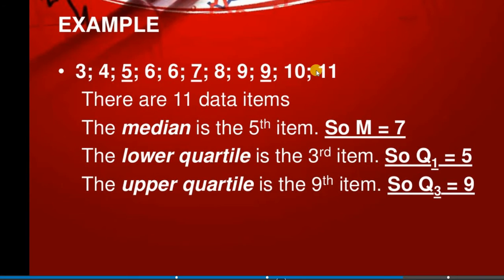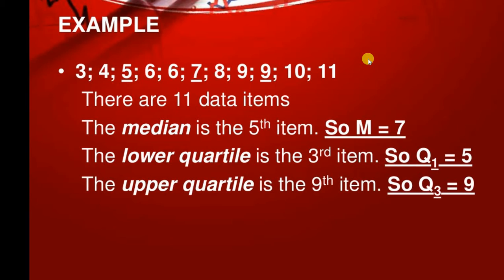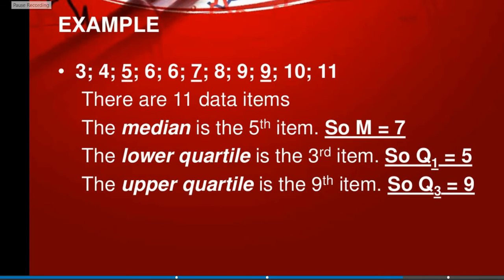How many number items are there? There are 11 items. The third item is Q1, the fifth item is Q2 (the middle item), and the upper quartile Q3 is the ninth item. Now, how can we find out Q1? We can apply the equation to study Q1.